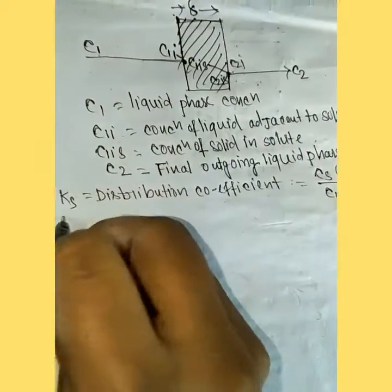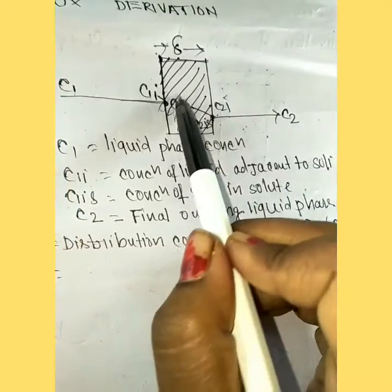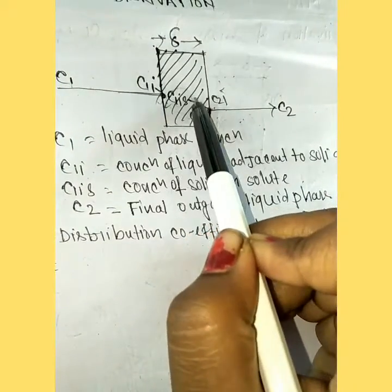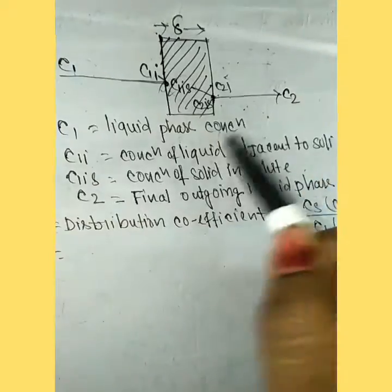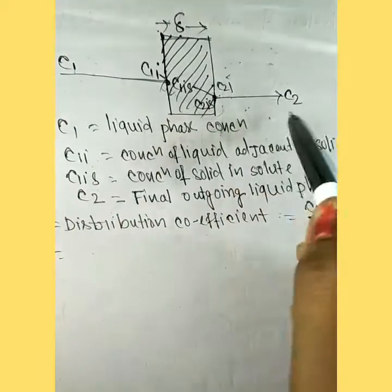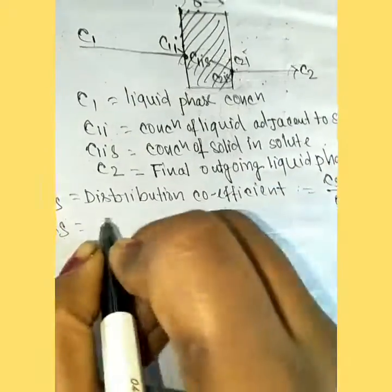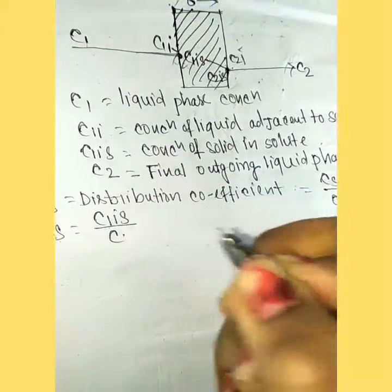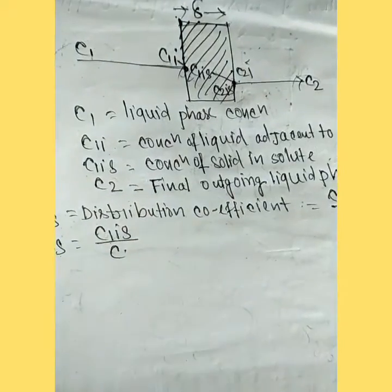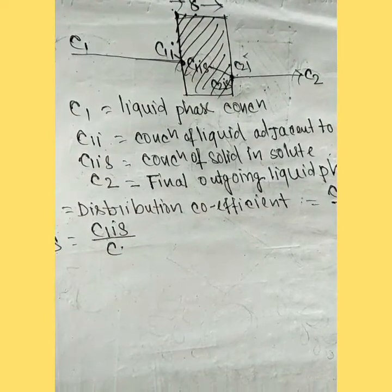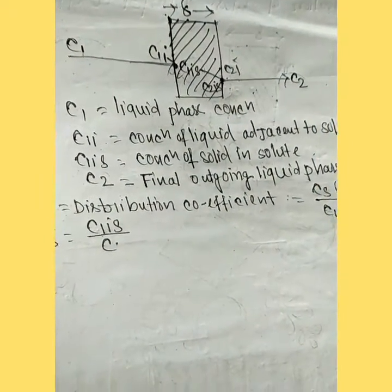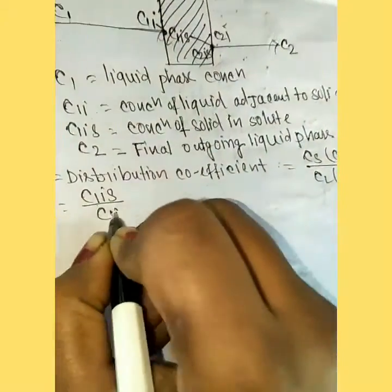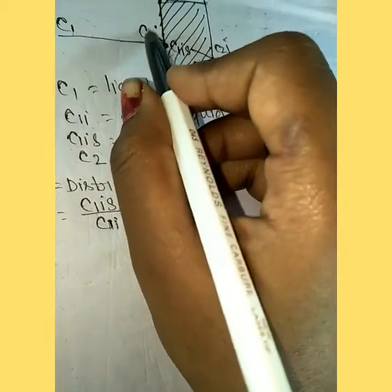From this figure, the solid concentration in solute and the concentration of liquid have a ratio. We see C1S/C1I, and this is also concentration of liquid adjacent to solid, so C2S/C2I.